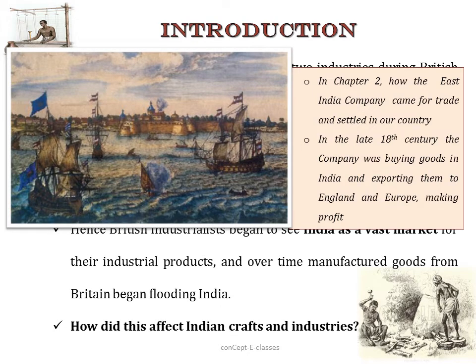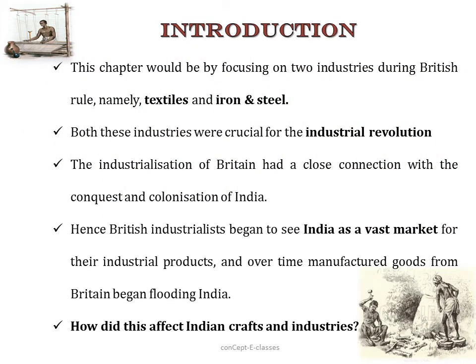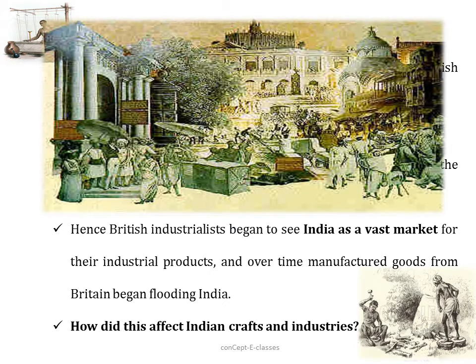This is an image of the trading ships found at the port of Surat, which was one of the most important ports in the Indian Ocean trade. Hence the British industrialists began to see India as a vast market for their industrial goods, and after a period of time the British started flooding Indian markets with their goods. That impact on Indian crafts and industries is what we are going to see in this chapter.